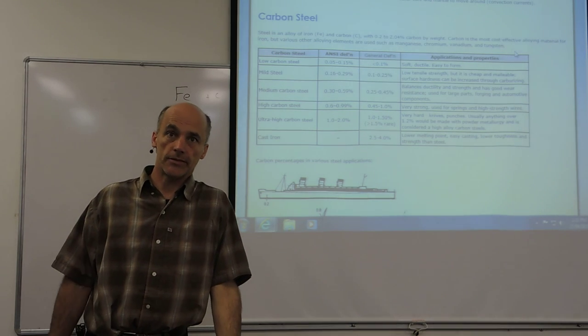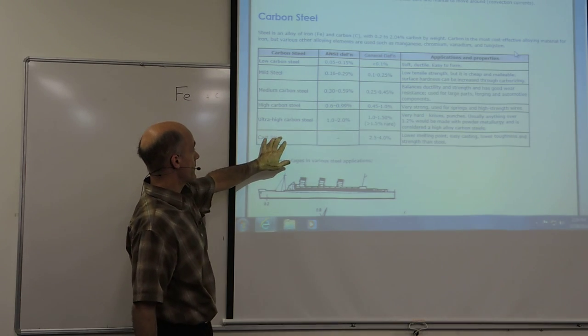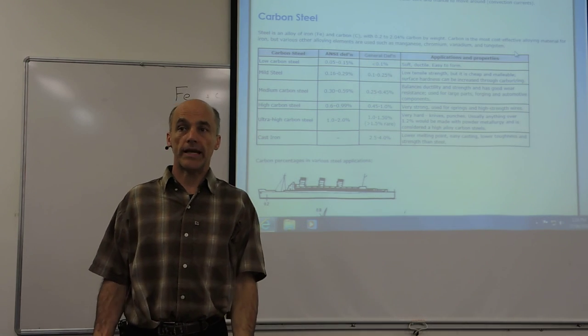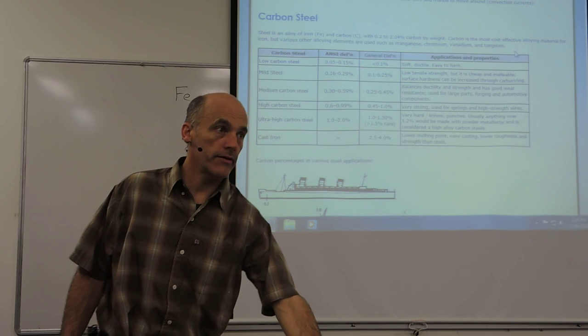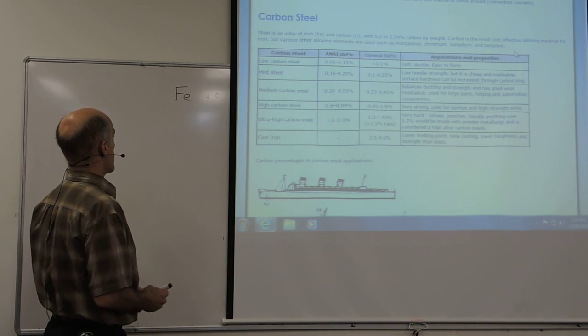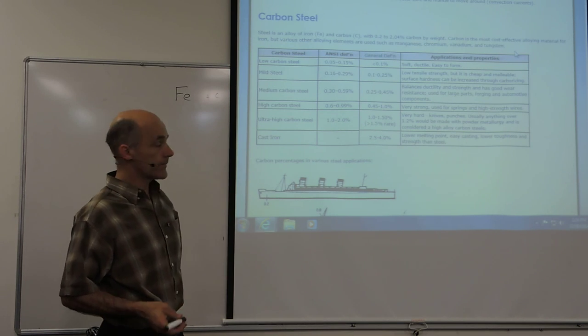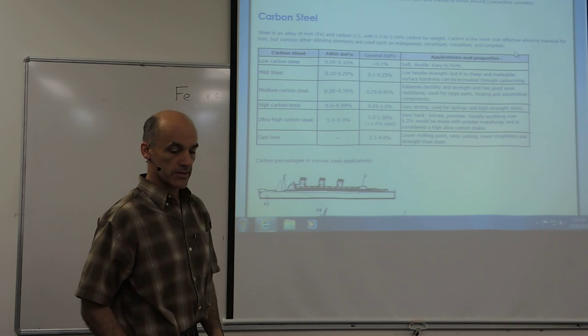So you can put too much carbon in and it's no longer steel. And further up, you have cast iron. Now, those percentages are percentage by weight. Carbon is much lighter than iron. Iron is a heavy atom. It's about four times as heavy as carbon, roughly. So if you want to know in terms of the number of atoms, you multiply those numbers by about four.